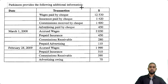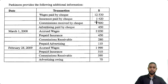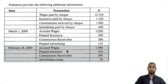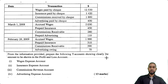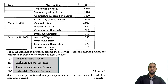Parkinson provides the following additional information in a table. We have payments: wages paid by check, insurance paid by check, commissions received by check, advertising paid by check. We have opening balances for March 1st: accrued wages, prepaid insurance, commissions receivable, prepaid advertising. And we have closing balances: accrued wages, prepaid insurance, commissions receivable, and advertising owing — so advertising switched from a prepayment to an accrual. They want us to prepare four T accounts showing the amount for the income statement — three expense accounts (wages, insurance, advertising) and one revenue account (commissions). That's worth 13 marks.